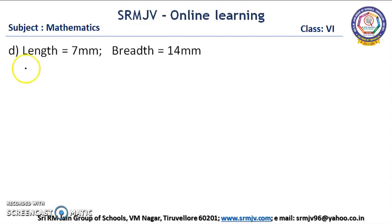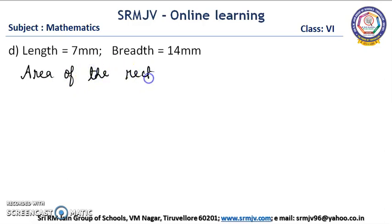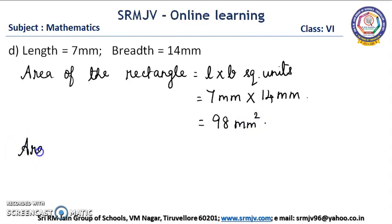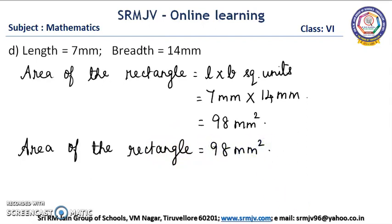Is it clear children? The next one: length of the rectangle is 7 mm and breadth is 14 mm. First we write the formula: area of the rectangle is equal to length into breadth square units. Here length is 7 mm into breadth 14 mm. Now we multiply: 7 fourteens are 98. So the area of the rectangle is 98 mm square.